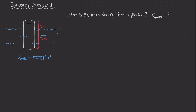A good place to start is the free body diagram of the cylinder. I'll represent the cylinder as a point mass. There are a few forces acting on it: number one is the weight of the cylinder itself, pointing down, which I'll call F sub G. We also have the buoyant force of the water pushing up against the cylinder, going up, which I'll call F sub B. F sub B is the buoyant force of the displaced water — not the entire cylinder, but however much of the cylinder is submerged beneath the surface.